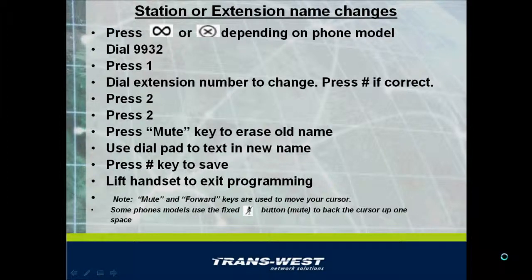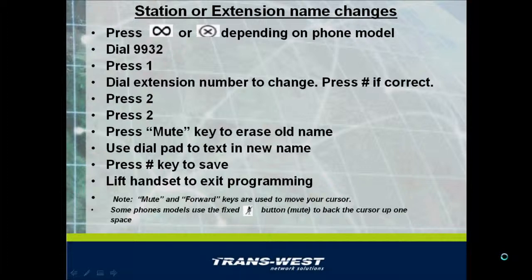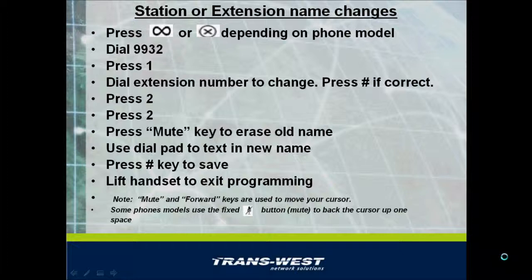Here are the steps to change a name in the phone system. First you'll need to enter programming mode. If your phone has a sideways or lazy 8 key — the infinity symbol — press this key. If your phone has a key with an X with a circle around it, press that key. Some older phones had a key labeled as special, but you'll start by pressing one of these keys. You'll dial 9932, press the digit 1 on your dial pad, and dial the extension number you wish to change the name on. Press the pound key to accept, then press the 2 key, then press the 2 key again.